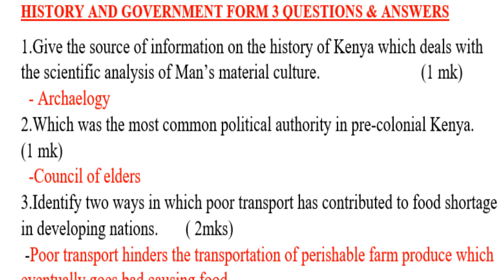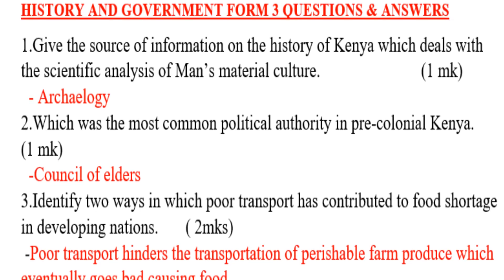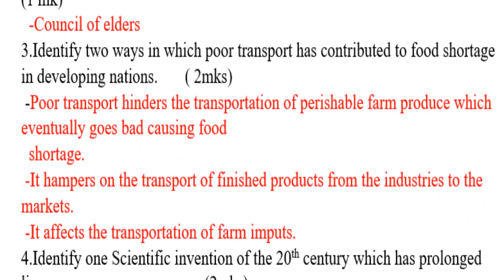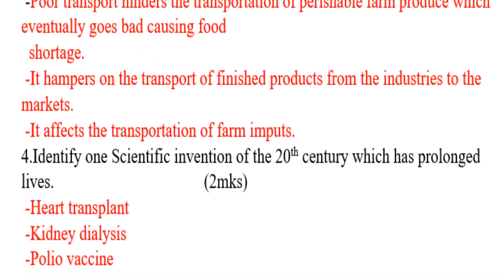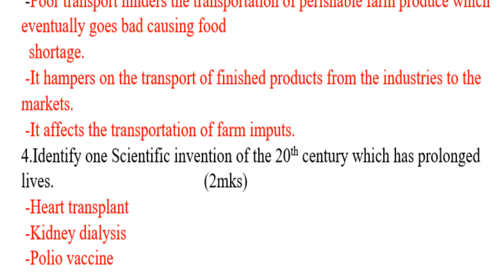Question number three: identify two ways in which poor transport has contributed to food shortage in developing nations. First, poor transport hinders the transportation of perishable farm produce, which eventually goes bad, causing food shortage. Second, it hampers the transport of finished products from industries to the market.